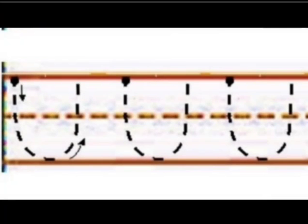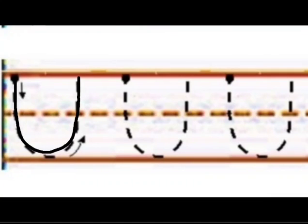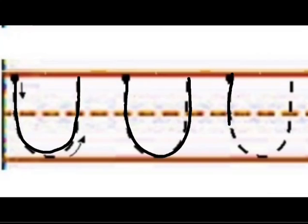All of you, get your notebook and pencils and let's start tracing an upward curve. Starting from the top, go down, make a slight curve, and go up. This is an upward curve. Let's trace it again: starting from the top, go down, make a slight curve, and go up. This is an upward curve.